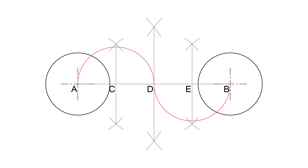The points of intersection of the semicircles and the circles A and B are the points of tangency. Label them T1 and T2. Draw the normals and the tangent T1 T2 as shown.